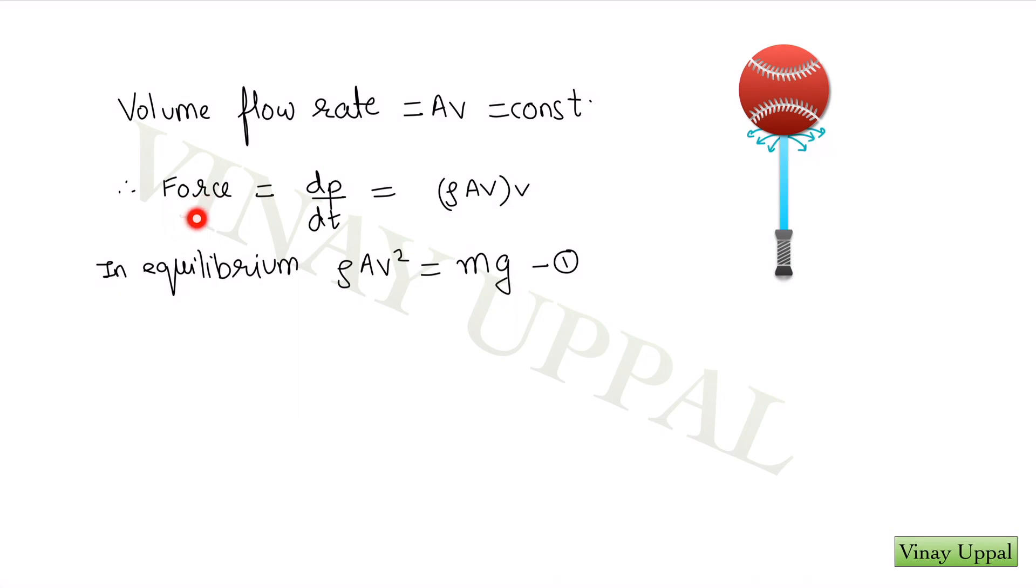The force will be simply the incident momentum per second, which I can write, because I already know volume flowing per unit time is area into velocity. So the mass flowing per unit time would be ρAv. And if I multiply that by velocity again, I will get the momentum per unit time, which is nothing but the force. So ρAv² will be my force. And in equilibrium, ρAv² is going to be balancing out the gravity. So this is my equilibrium equation. Now let's look at what happens if you push the sphere downwards.